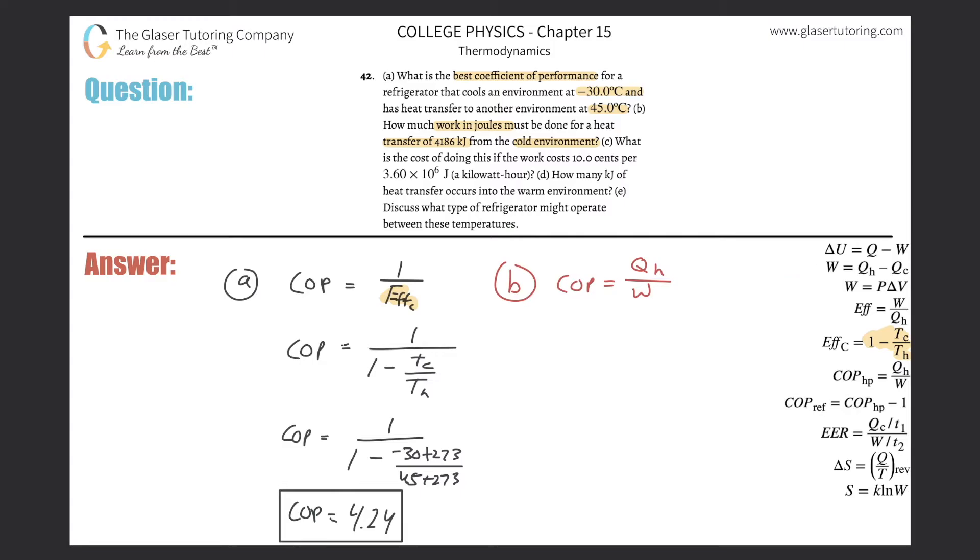So if I solve now this formula for Q sub H, it's simply going to be just going to add this term on over to the left-hand side. So that's going to be Q sub H will be equal to then the work plus the cold reservoir temperature. And now what I can do is a simple substitution. I'm going to take that and plug it on in. So now we have the coefficient of performance equals W plus Q sub C all over W. And remember, now the whole goal is to solve this for the work.